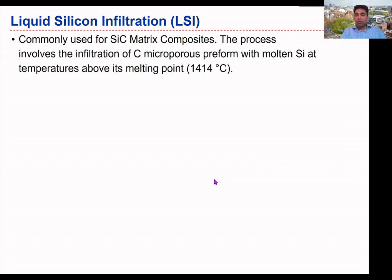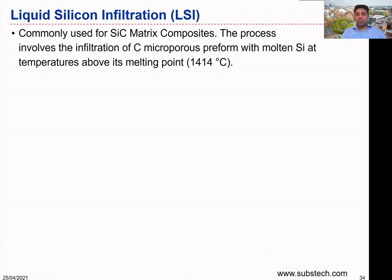The capillary reaction depends on the radius of the pores, the surface tension of the liquid, and the compatibility between the reinforcement and the resin material. We discussed how these parameters can influence the infiltration process, and if you match those parameters properly, we can have proper wettability of the reinforcement by the resin material. In this process, the capillary reaction plays an important role in wetting the fibers to minimize possible porosities.